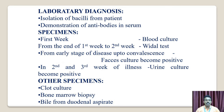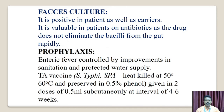Laboratory diagnosis. The isolation of bacilli from a patient and demonstration of antibodies in serum. Specimens include: first week — blood culture; end of first to second week — bone marrow culture; early stage — feces culture, which may be positive up to convalescence. Second and third week of illness — urine culture becomes positive. Other specimens include clot culture, bone marrow biopsy, and bile from duodenal aspirates. Feces culture is useful in patients as well as carriers. It is valuable in patients on antibiotics as the drug does not eliminate the bacilli from the gut rapidly.